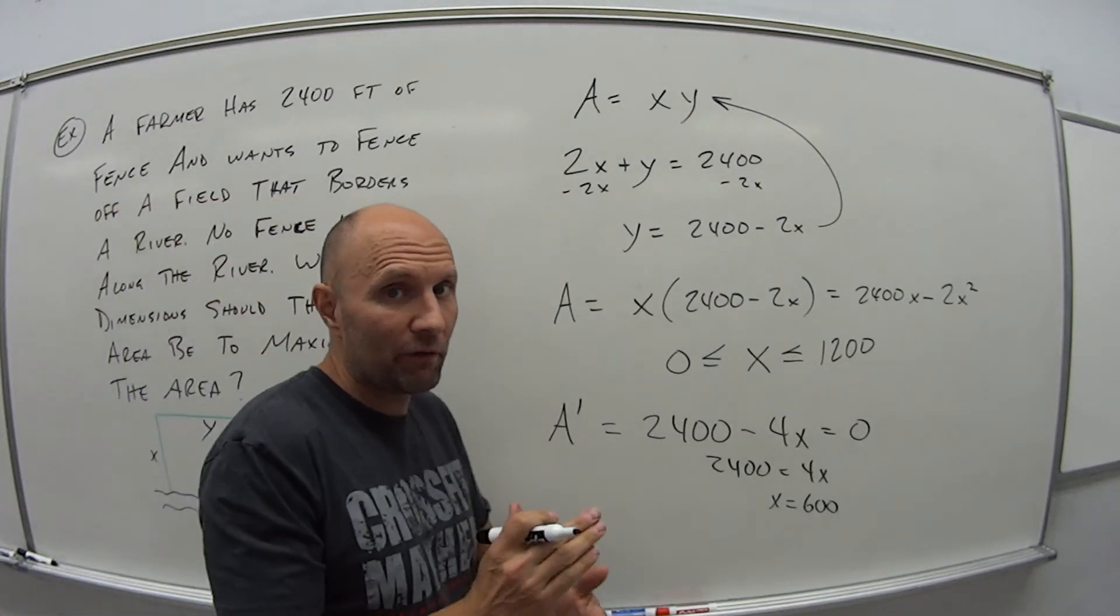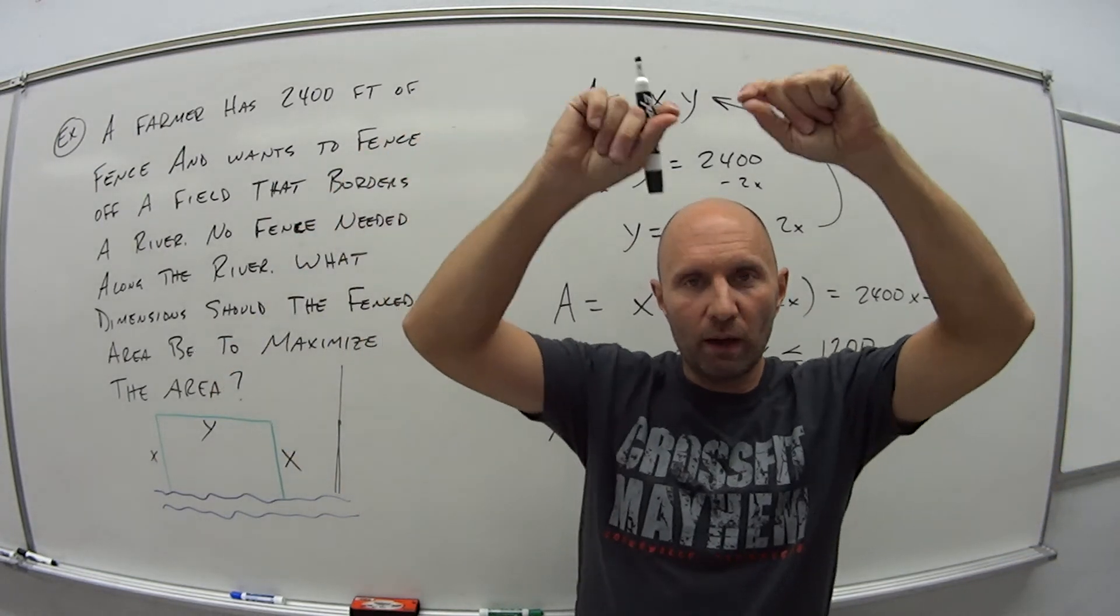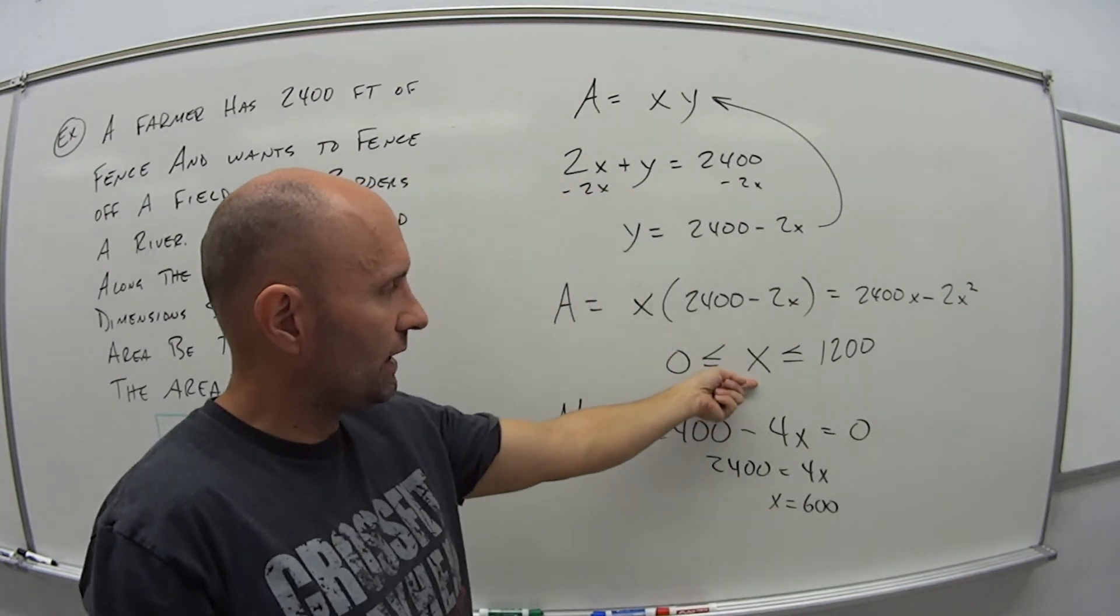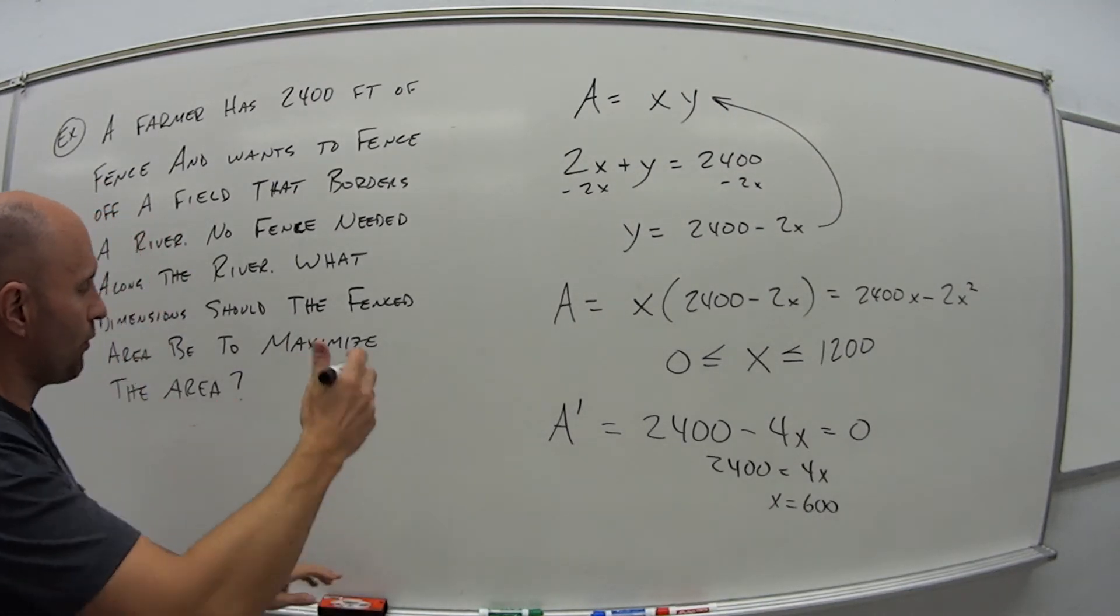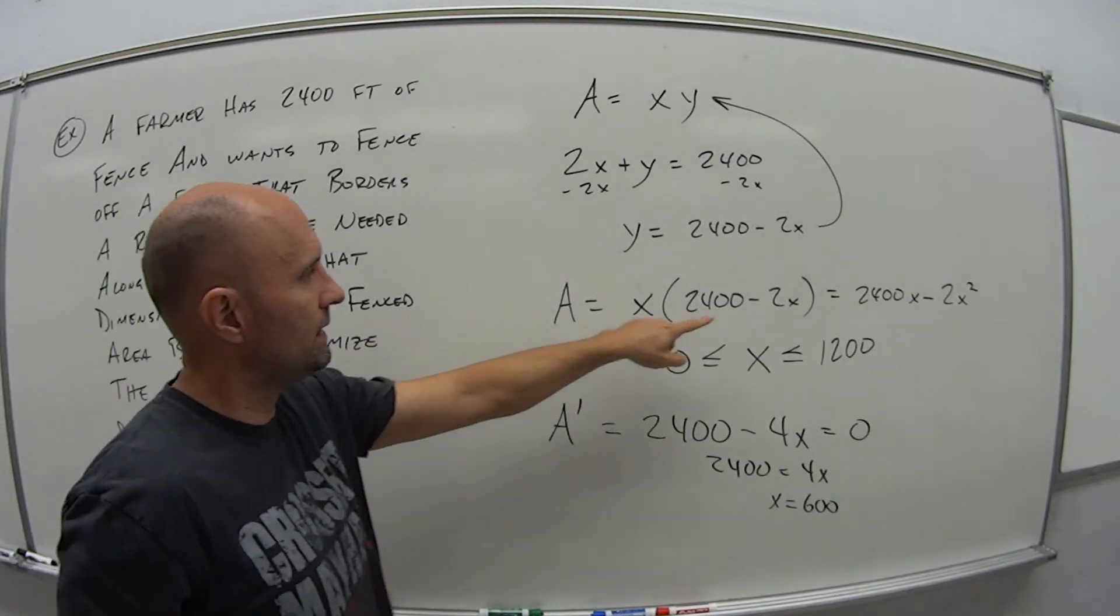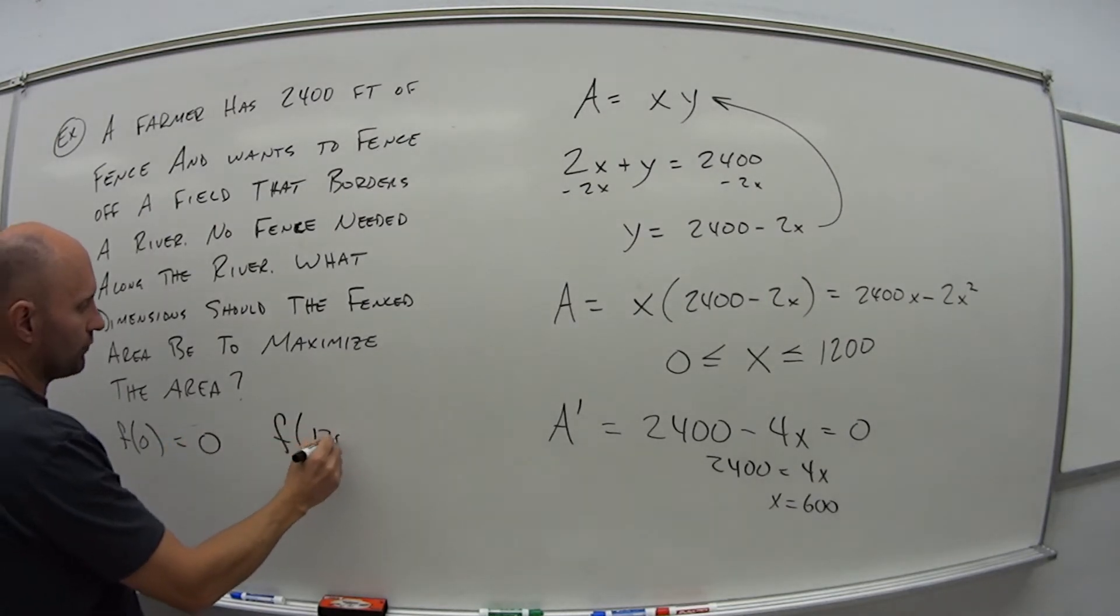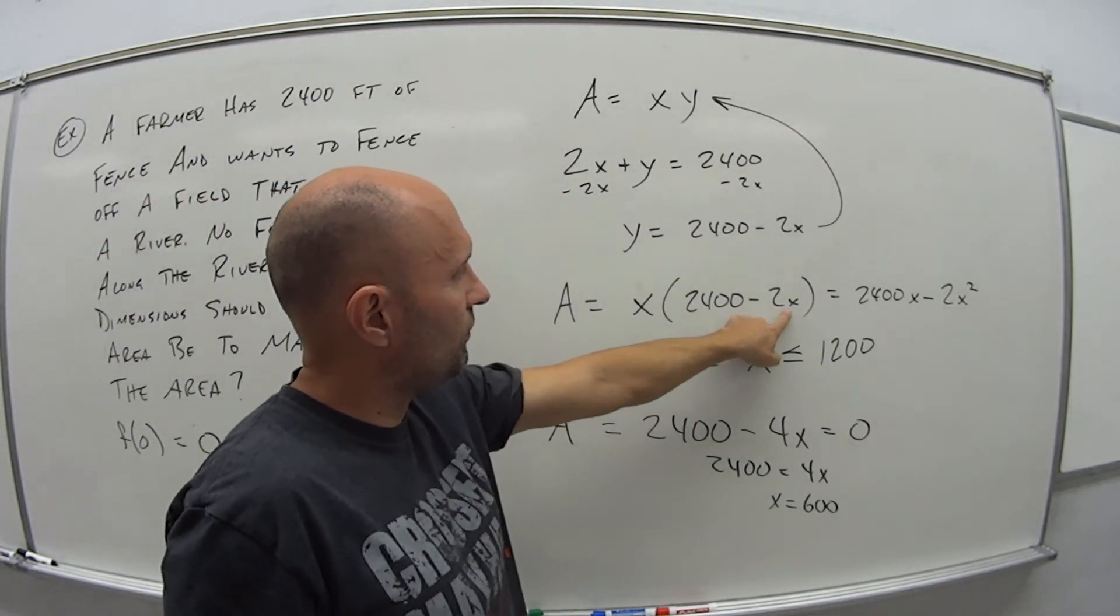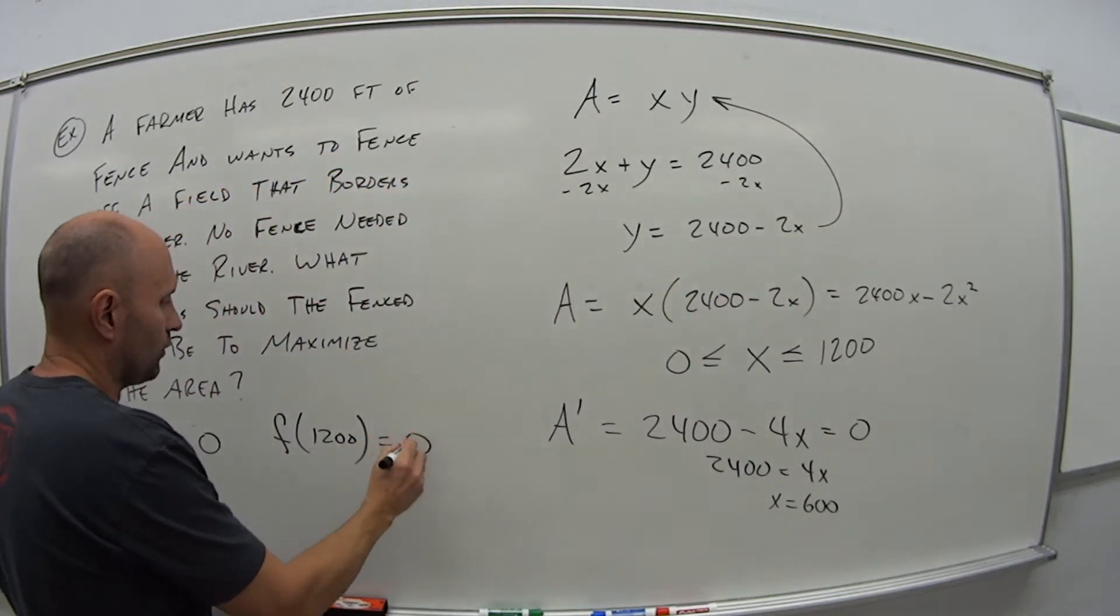So again, think about that closed interval method. The max or min will occur at either endpoint or at one of the critical numbers within that interval. And does 600 fall in the interval? Yes, it does. So now let's figure that out. Well, at the endpoints, that's what? That's F of 0. So if I plug 0 into here, I get 0. And F of 1,200, well, if I use this one here that's not expanded out, I get what? 2 times 1,200 is 2,400. 2,400 minus 2,400 is 0. So this is also 0. So as we expect, there's no area covered.